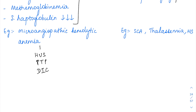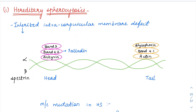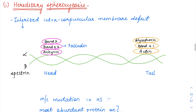Most of the hemolytic anemias fall under the extravascular hemolytic category. Sickle cell anemia, thalassemias, and hereditary spherocytosis are all going to be examples of extravascular hemolysis. Let us start with hereditary spherocytosis. Hereditary spherocytosis is actually an intracorpuscular defect in the membrane of the RBCs and it is an inherited disorder.